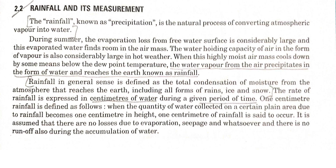The water-holding capacity of air in the form of vapor is also considerably large in hot weather. When this highly moisturized air mass cools down below the dew point temperature, the water vapor from the air precipitates in the form of water and reaches the earth — this is known as rainfall. In a general sense, rainfall is defined as the total condensation of moisture from the atmosphere that reaches the earth, including all forms of rain, ice, and snow. The rate of rainfall is expressed in centimeters of water during a given period of time.